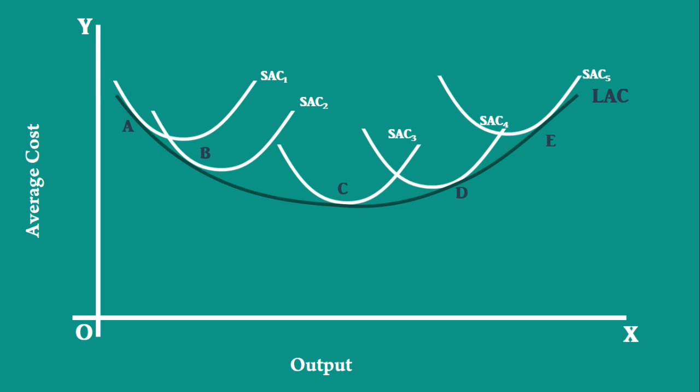Again note the tangential points A, B, C, D, and E. These are points at which the firm will operate if it chooses one. M, N, P, Q, and R are the outputs respectively.